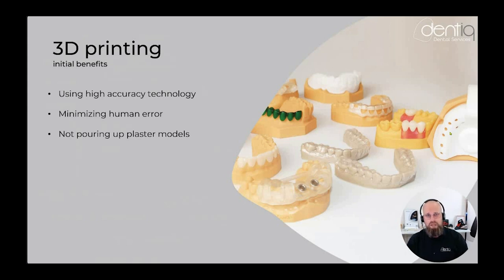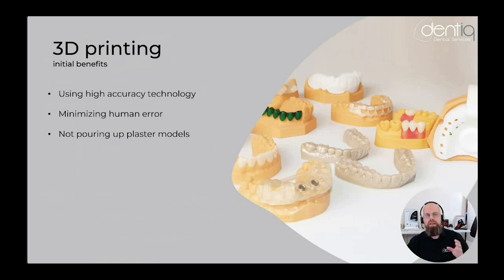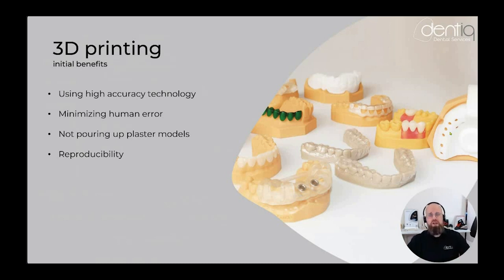We no longer need to pour plaster models. Impressions can be inaccurate; the powder-to-liquid ratio, pouring, and waiting time all introduce errors. Technically, a plaster model needs about 24 hours to properly set due to expansion and moisture. With 3D printing, immediately after design I can print the model and work on it. And reproducibility is simple — if something goes wrong, just hit print again.